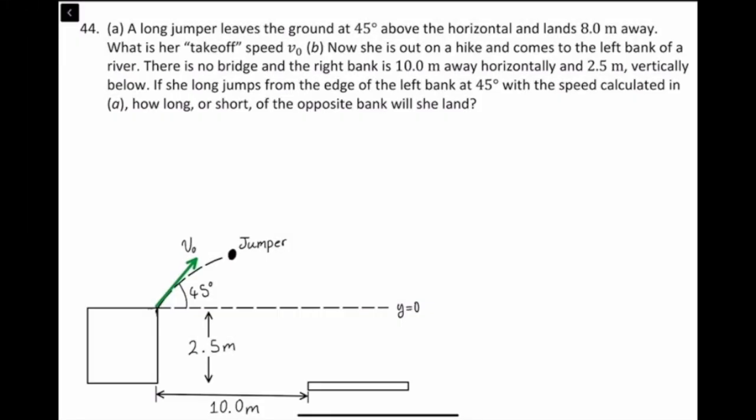This is problem 44, chapter 3. A long jumper leaves the ground at 45 degrees above the horizontal and lands 8 meters away. What is her takeoff speed, or initial velocity?